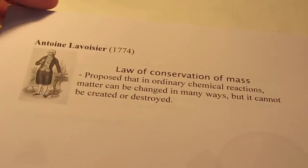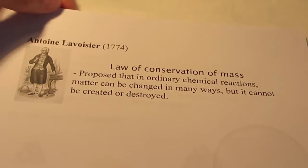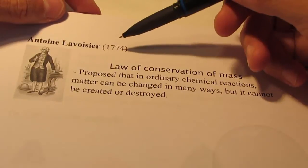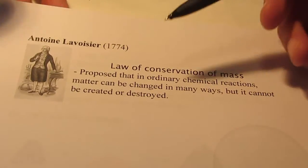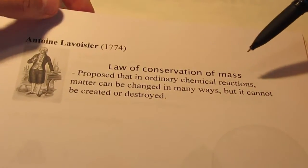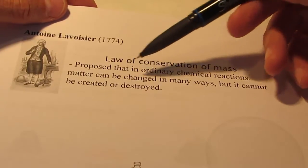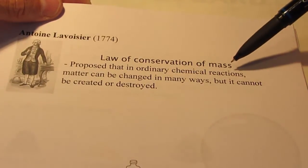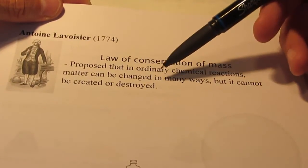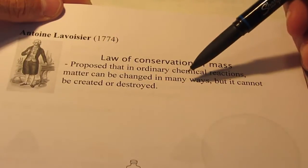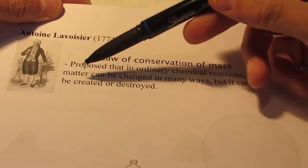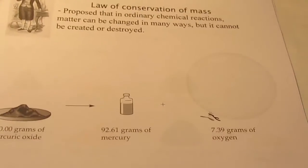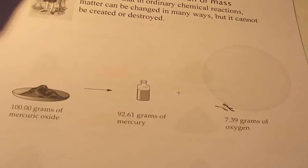In the mid to late 1700s, an experiment was done by Anton Lavoisier. He created something called the Law of Conservation of Mass. And he proposed that in ordinary chemical reactions, matter can be changed in many ways, but it cannot be created nor can it be destroyed. Let me illustrate that with this image here.